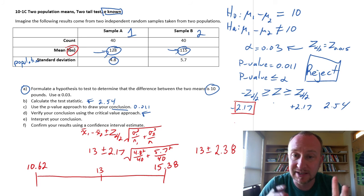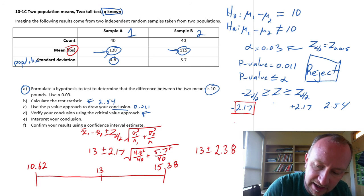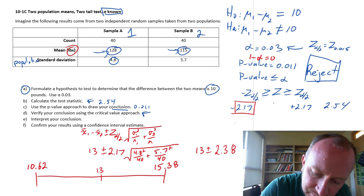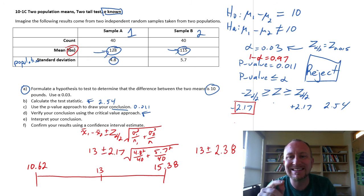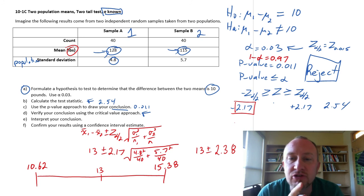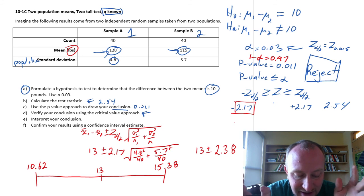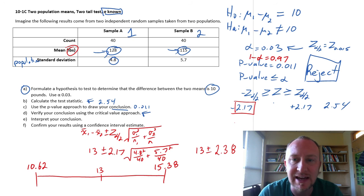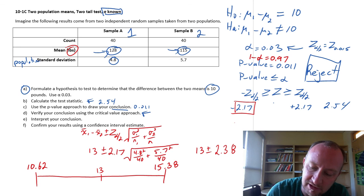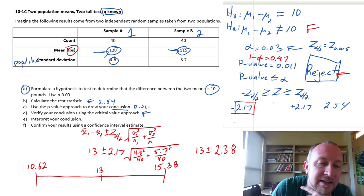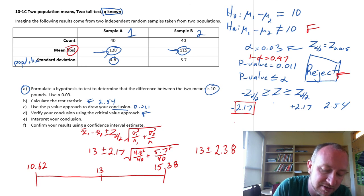So let's not forget what this is. We calculated this interval estimate at the 97% confidence, right? 1 minus alpha is 0.97. So I'm 97% confident that the true difference in these population means is between 10.62 and 15.38 pounds. How is that consistent with our conclusions? Well, remember we rejected. We said it is not 10 at that level of significance.